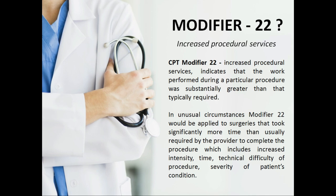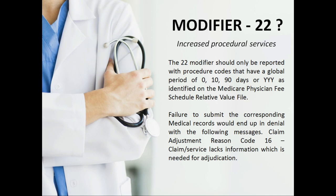Modifier 22 should only be reported with procedure codes that have a global period of 0, 10, or 90 days, as identified on the Medicare Physician Fee Schedule relative value files. Failure to submit the corresponding medical records will result in a denial with claim adjustment reason code 16 — 'claim or service lacks information needed for adjudication.' People who work in AR calling will frequently encounter these kinds of denials. When modifier 22 is appended, we must provide supporting medical records and documents to the insurance company.